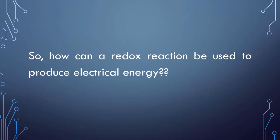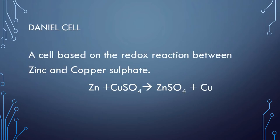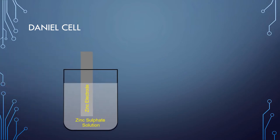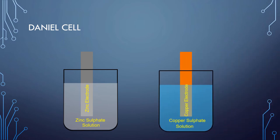So how can a redox reaction be used to produce electrical energy? Let us understand this by taking a Daniel cell, which is an electrochemical cell based on the redox reaction between zinc and copper sulfate. In a Daniel cell, a zinc rod is dipped in a solution of zinc sulfate taken in a beaker — this forms one half cell. The other half cell is formed by dipping a copper rod in a solution of copper sulfate taken in another beaker. The zinc and copper rods are connected to each other by metallic copper wires.